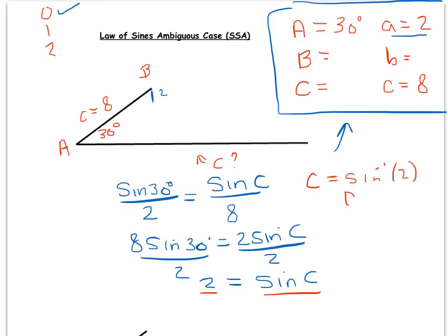Right? That does not exist. So it's there in the algebra that you recognize, oh, zero triangles are possible here. Okay, this triangle cannot exist.